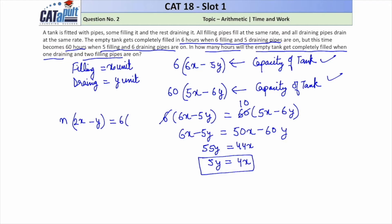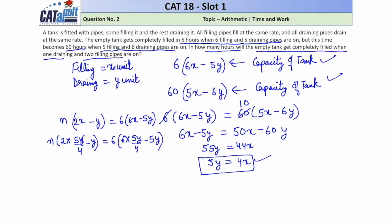We can use the equation 5Y = 4X, so X = 5Y/4. Substituting into both sides: n(2 · (5Y/4) − Y) = 6(6 · (5Y/4) − 5Y). This gives n(10Y/4 − Y) = 6(30Y/4 − 5Y). The Y cancels throughout.